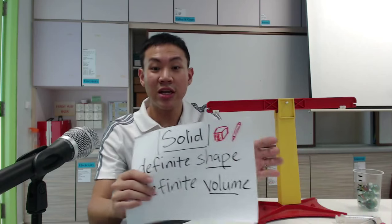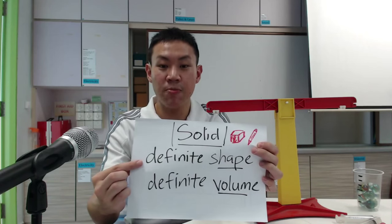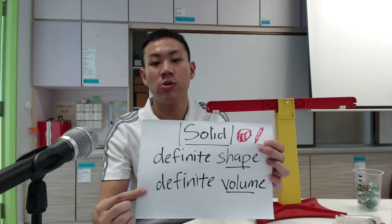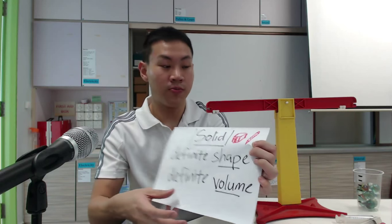Looking at matter, there are three different states: solid, liquid, and gas. Let's look at solid first. Solid refers to something that has a definite shape and definite volume, which means it has a fixed shape and a fixed volume.